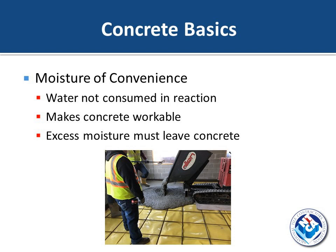Moisture of convenience is anything over the 0.35 water-to-cement ratio — water that is not consumed in the hydration reaction. This moisture makes concrete workable, but any excess moisture must leave the concrete. Pictured here is a job site where concrete is being poured over an impermeable moisture vapor barrier. This vapor barrier must meet the requirements of ASTM E1745. The only place for this moisture to leave the system is through the top, so once flooring is installed, moisture is driven out through the grout joints.